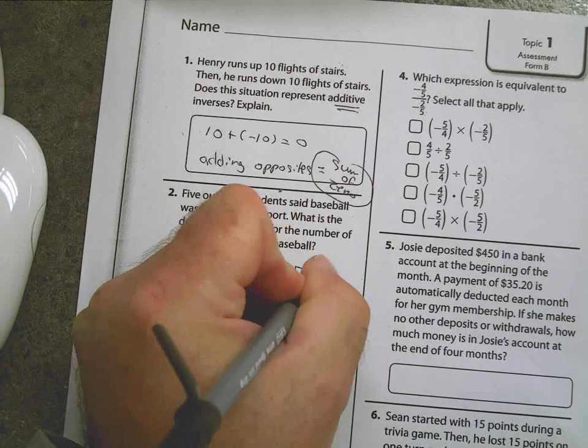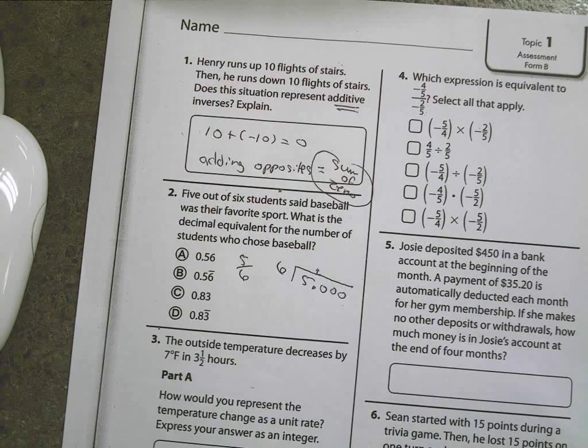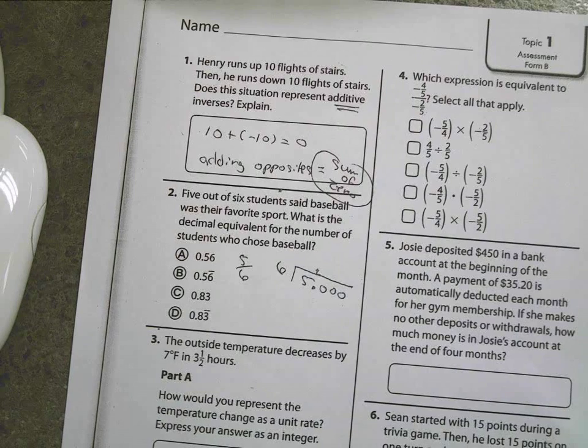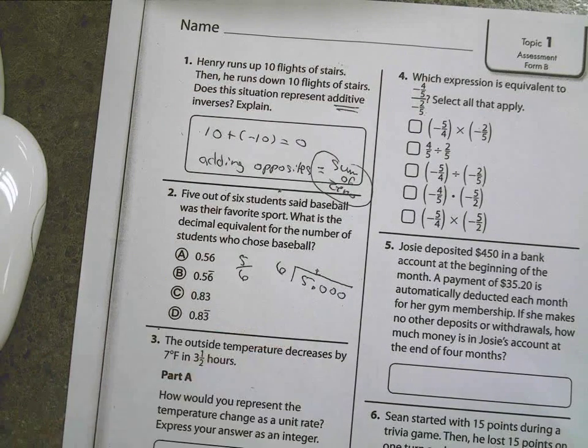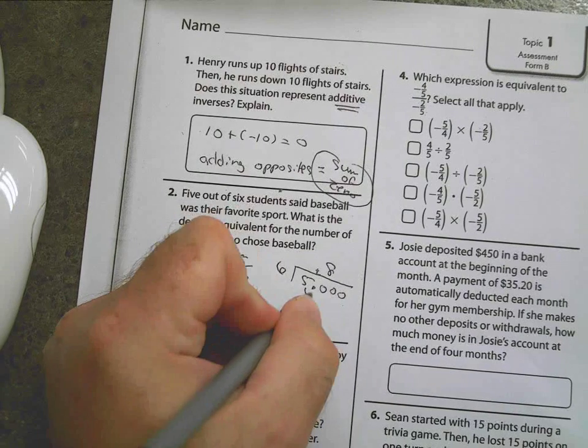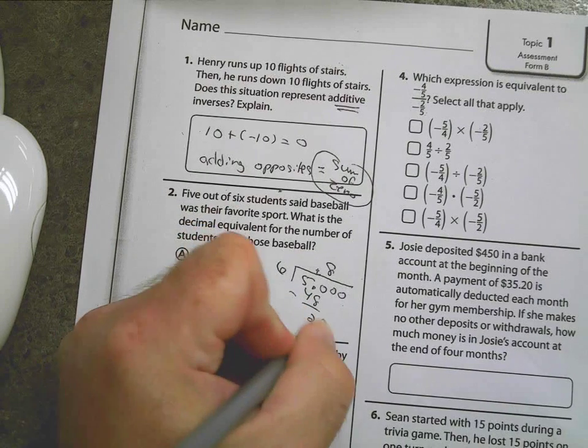Put a decimal point in zero, zero, zero. Sometimes you might even need four numbers. Now it's just a division problem. You guys don't like to divide, but that's fine. Six goes into fifty eight times. I get forty-eight. Subtract out, I get a two. Zero.